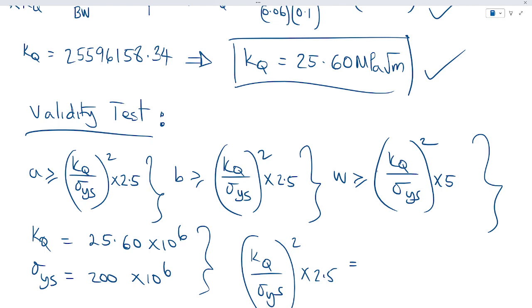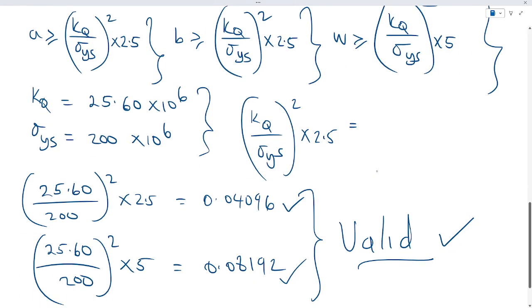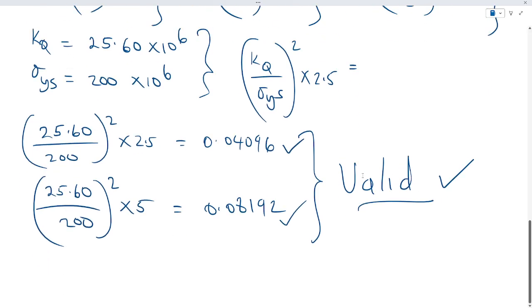You can deduce that the value of the Kq, which is 25.60, and the sigma Y is 200 times 10 to the 6, shows that all three equations are valid. So thank you very much, thank you.